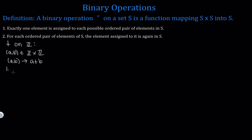Condition one says that we need each ordered pair to get sent to only one element. That means that if we have any ordered pair (a, b) and it gets sent to a plus b, then a plus b is the only element it gets assigned to. For example, if somehow it also got sent to a minus b or anything else different from the first element, then this would no longer be a function. We can't have that, and in fact we don't — so condition one is satisfied.